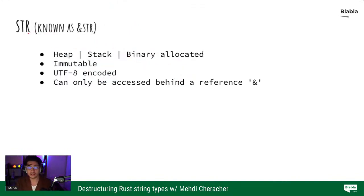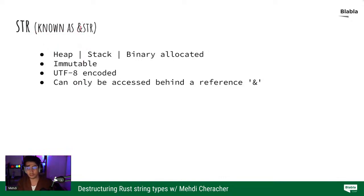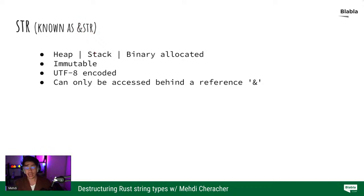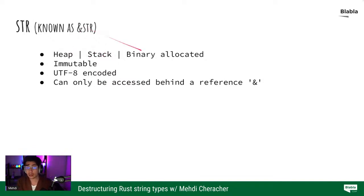Now we have the str, also known as the ref str — &str — which means it's always accessible behind a reference. A plain str in an actual codebase is always accessed behind a reference. And this could be either heap or stack allocated. The str could live on the heap, on the stack, or it could also live in the binary.